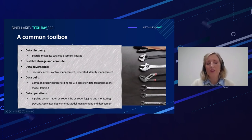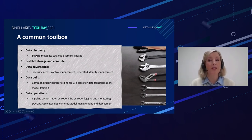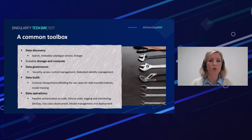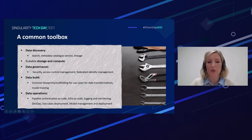The self-service infrastructure should be seen as a common toolbox of loosely coupled tools that require little to no maintenance. We can see different dimensions inside this toolbox. For data discovery: capabilities for searching the catalog, a metadata catalog service, and lineage to track where data came from and spot root causes of issues. Definitely we need scalable storage and compute. For data governance: security, access control management, and federated identity. For data build: common blueprints and use cases for transformations and model training.